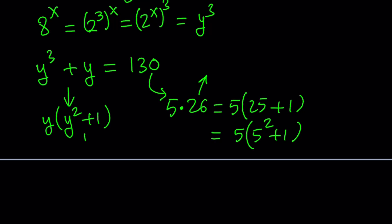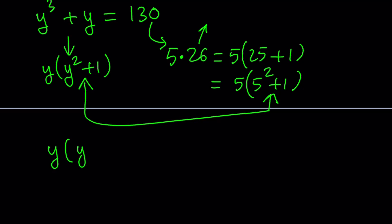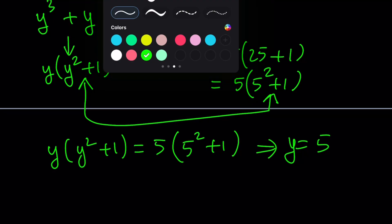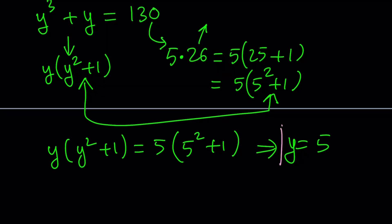Now notice the similarity between these two expressions. And when you set them equal to each other, y times y squared plus 1 equals 5 times 5 squared plus 1, you can safely say that y equals 5 is a solution. We're not necessarily saying it's the only solution, but we're saying that y equals 5 works. So what about the rest? Well, once you know that y equals 5 is a solution, the rest is easy.